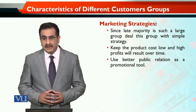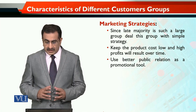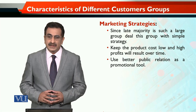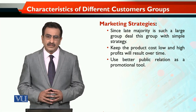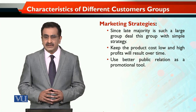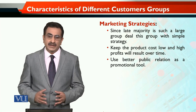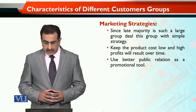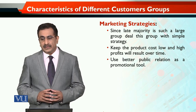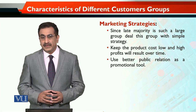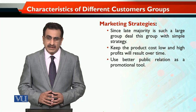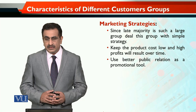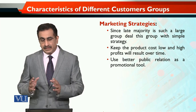However, they are important because they form a very large segment — 34%. Since the late majority is such a large group, deal with this group using a simple strategy. Think of them as a segment and evolve your marketing mix to attract and capture them so they adopt your application. Keep the product cost low — price is a key element for them. Even if you reduce your profits initially, it is worthwhile.